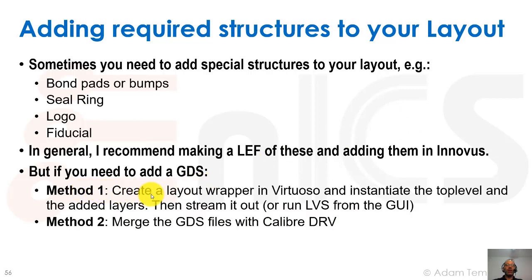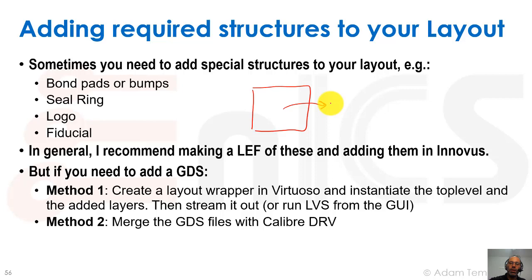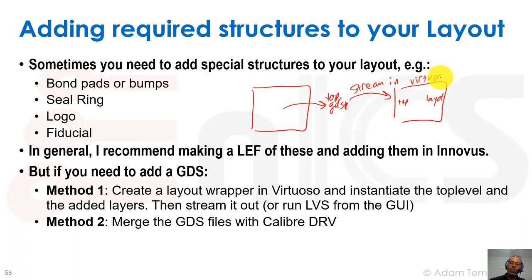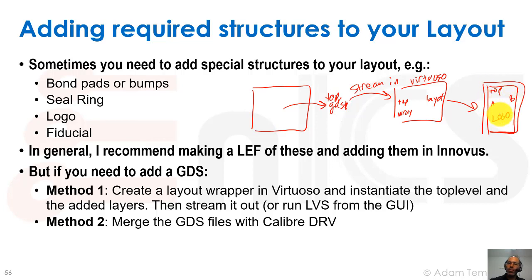If you need to add a GDS, one method is to create a layout wrapper in Virtuoso: instantiate the top level and the added layers, then stream it out or run LVS from the GUI. We take our Innovus output, dump out a GDS file — our top.gds — stream it into Virtuoso, and get a top layout cell. Then we make another cell called wrapper, instantiate the top and the logo layer and whatever else we need, add ports as required, and stream that out to use as our layout netlist (.sp).